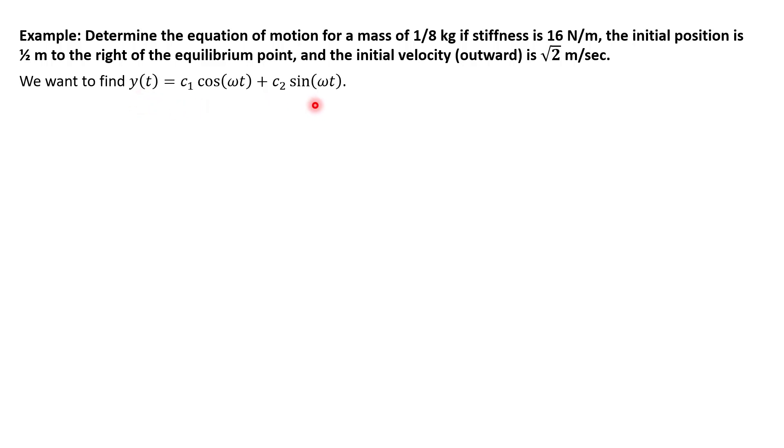So we have to figure out omega and then eventually c1 and c2. So finding omega using our formula that it equals square root k over m, we just plug in our values, and we find out that omega is 8 square root 2. And so we can fill in our equation, and now we just need to find our coefficients.